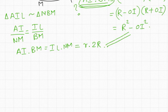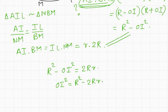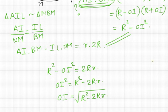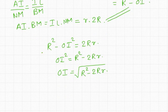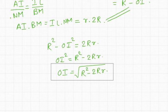Equating the two expressions: R² − OI² = 2Rr. Therefore OI² = R² − 2Rr, and the distance between the circumcenter and incenter is OI = √(R² − 2Rr), where R is the circumradius and r is the inradius of the triangle.